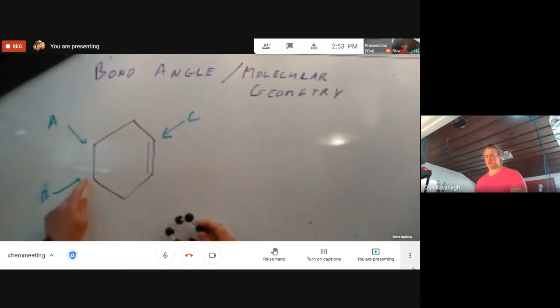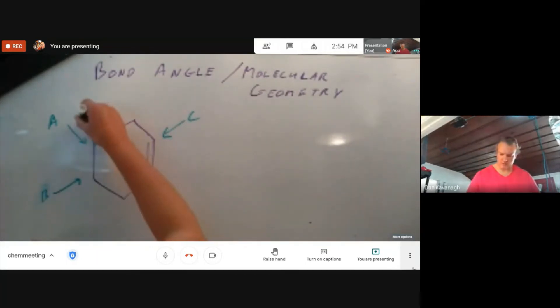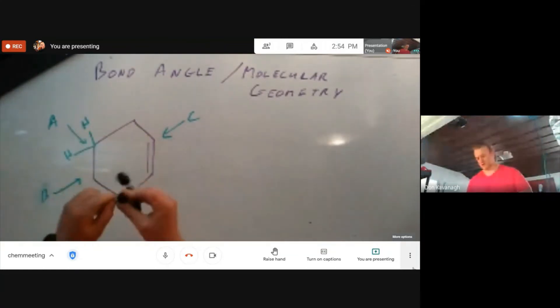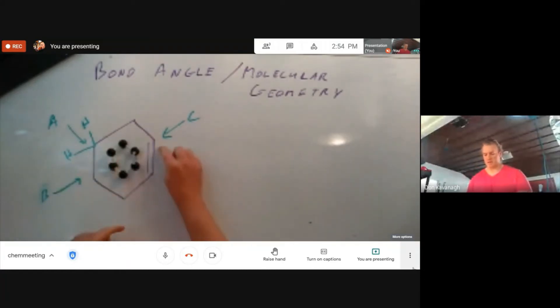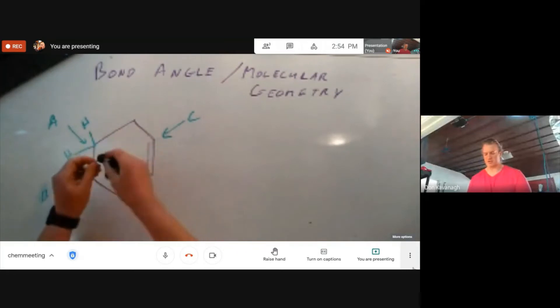The bond angle of these three carbons, or molecular geometry, are very similar. Let's draw hydrogens on this right here. Here's my double bond. I'm going to put some hydrogens on carbon A right here.